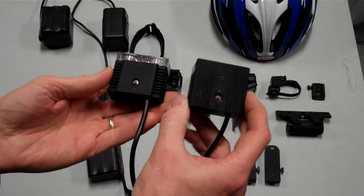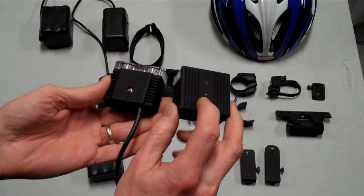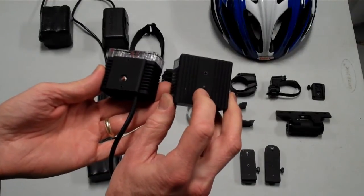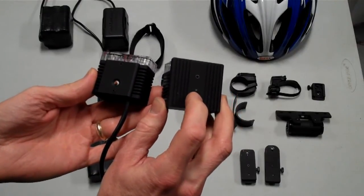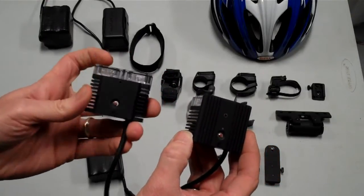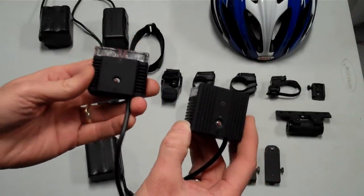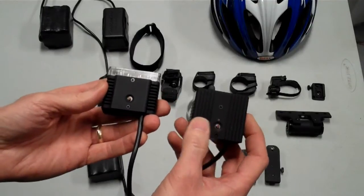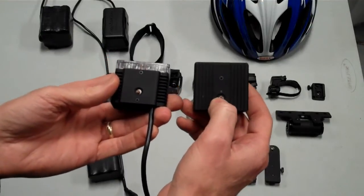The second thing you might notice, kind of subtle here, is that there's a small LED on the headlight that indicates battery status. And there is none on the taillight. The taillight actually flashes the main LEDs to indicate battery status. Let me demonstrate that.